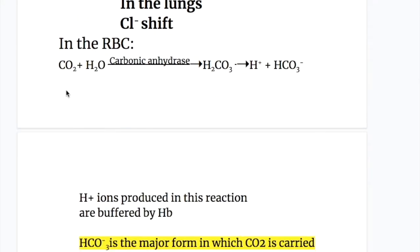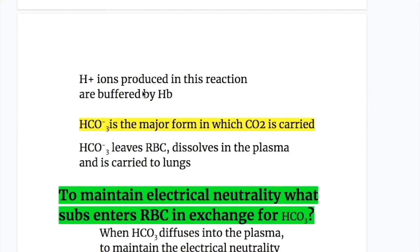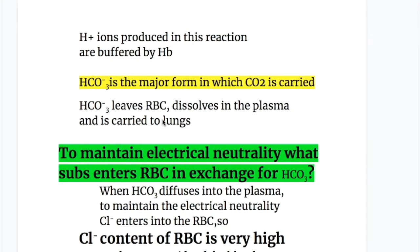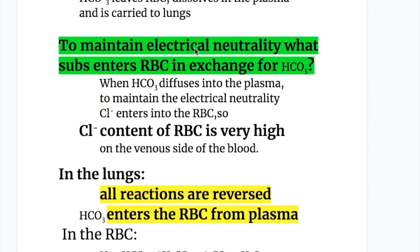What happens in the RBC? Carbon dioxide combines with water to form carbonic acid (H2CO3), which is a weak acid, catalyzed by the enzyme carbonic anhydrase. Carbonic acid breaks into hydrogen ions and bicarbonate ions. The hydrogen ions produced are buffered by hemoglobin. Bicarbonate is the major form in which carbon dioxide is carried — about 90%. Bicarbonate then leaves the RBC, dissolves in plasma, and is carried to the lungs. To maintain electrical neutrality, chloride enters the RBC in exchange for bicarbonate, so the chloride content of the RBC is very high on the venous side.